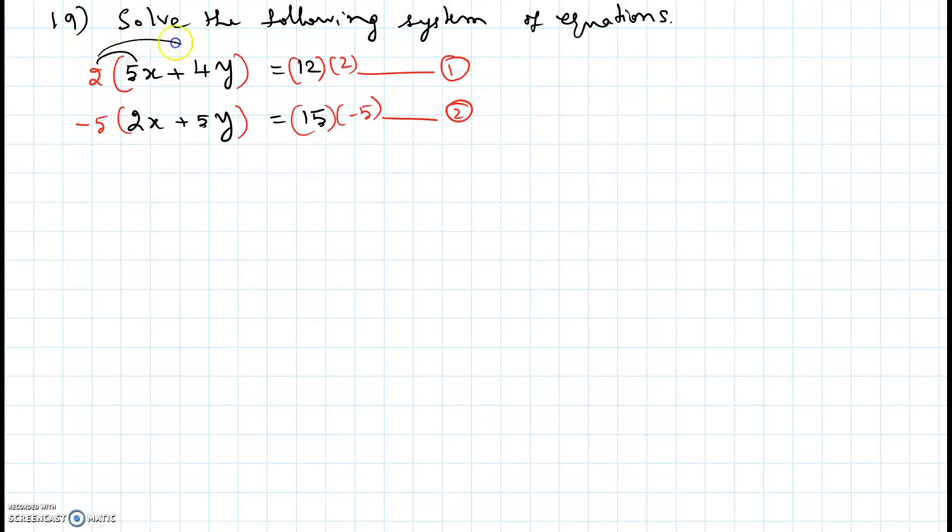When we distribute that will be 10x plus 8y equal to 24, that is equation 1 rewritten. For the second one it is negative 10x and negative 25y equal to negative 75.